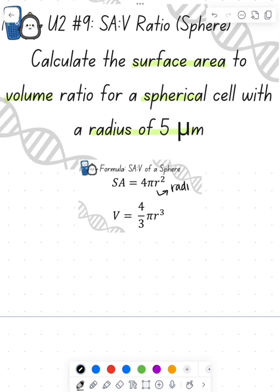So first thing, what is the equation? Surface area is 4πr², where r is our radius, and volume is (4/3)πr³, where again, r is our radius.